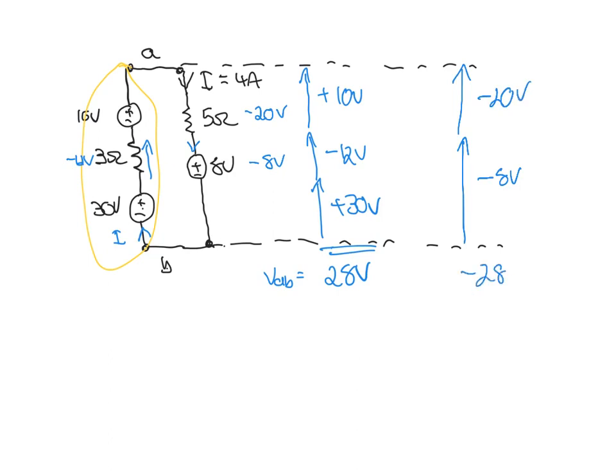As we would expect from the conservation of energy law, the two must balance. So VAB equals 28 volts. I hope that makes sense.